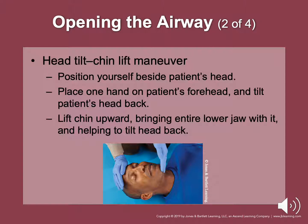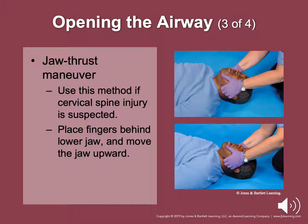Continue to hold the forehead and maintain the backward tilt of the head. The jaw thrust maneuver is the method used if cervical spine injury is suspected. Kneel above the patient's head, place fingers behind the angles of the lower jaw, and move the jaw upward, using your thumbs to help position the lower jaw to allow breathing through the mouth and nose. This maneuver should open the airway when performed properly.